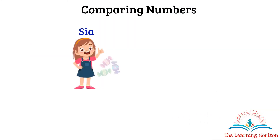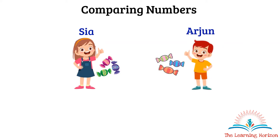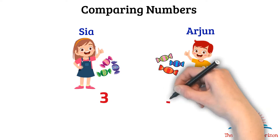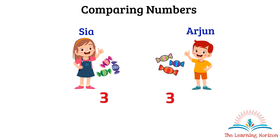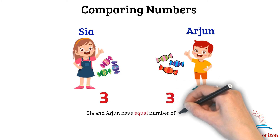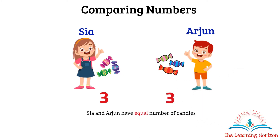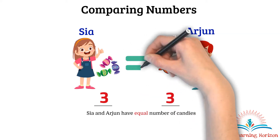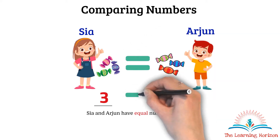We have Sia and Arjun having few candies. Sia has 3 candies and Arjun also has 3 candies. Sia and Arjun have an equal number of candies because they have the same number. When two quantities or values are equal we use the equal sign. We write 3 is equal to 3.